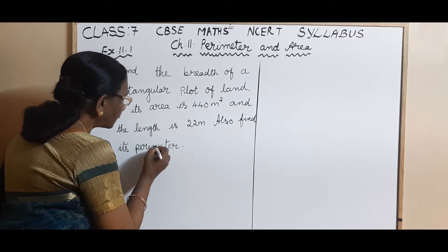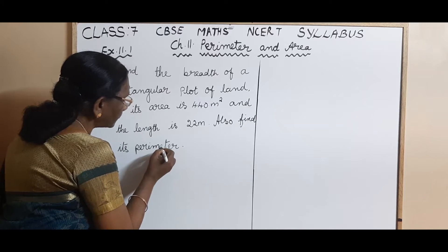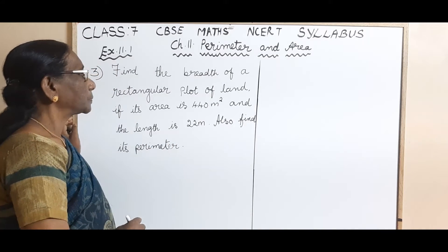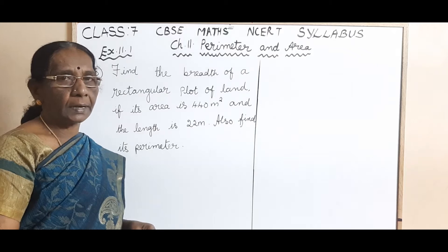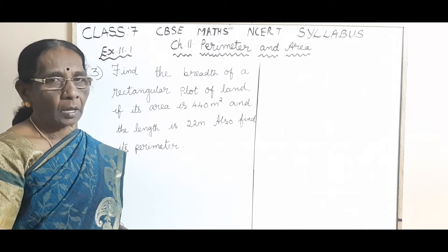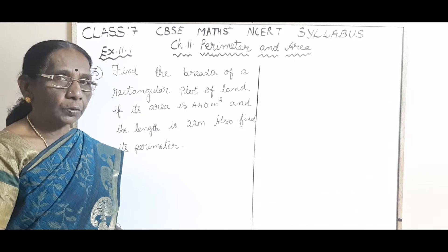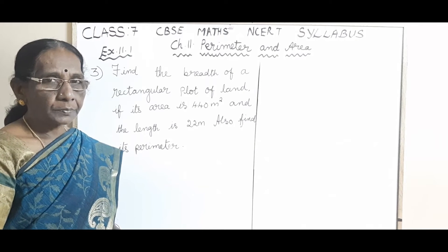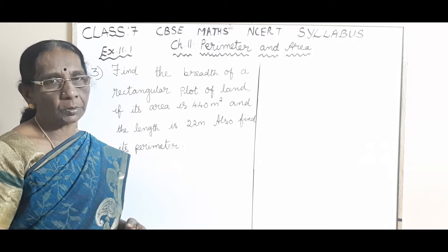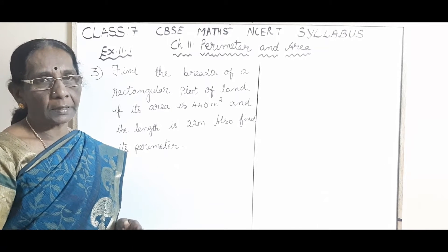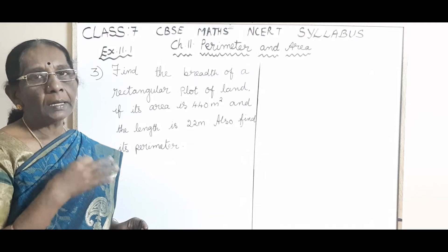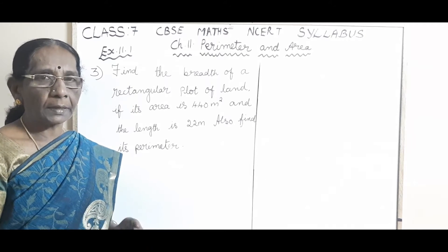Children, first you have to understand the meaning of the question. After reading and understanding the meaning, you have to select the given information. After selecting the given information, you have to move to the question — what is asked? Then, using the information, decide which method to apply. These are the steps: reading, understanding, analyzing, then selecting the method, adapting it, and finding the solution.